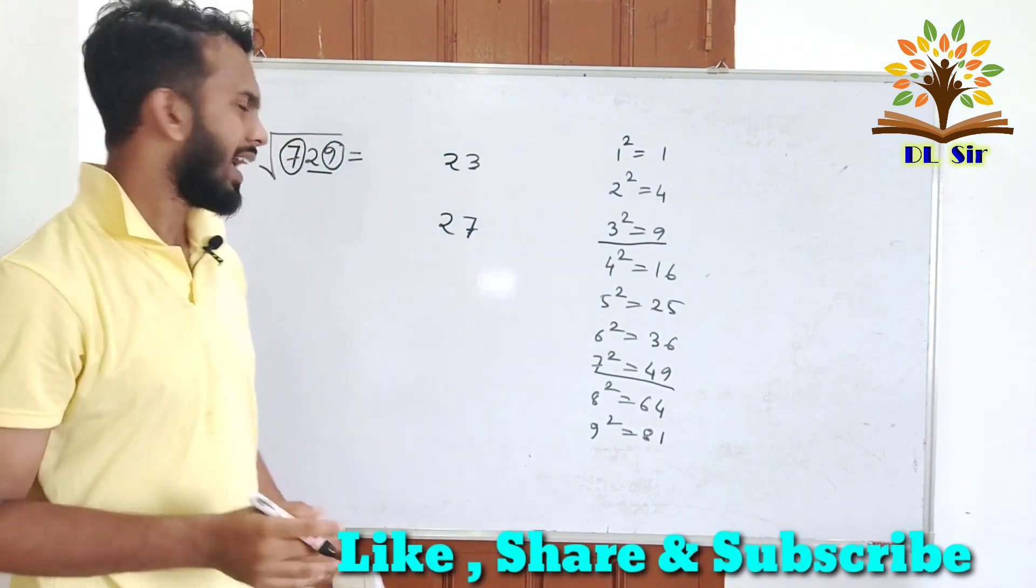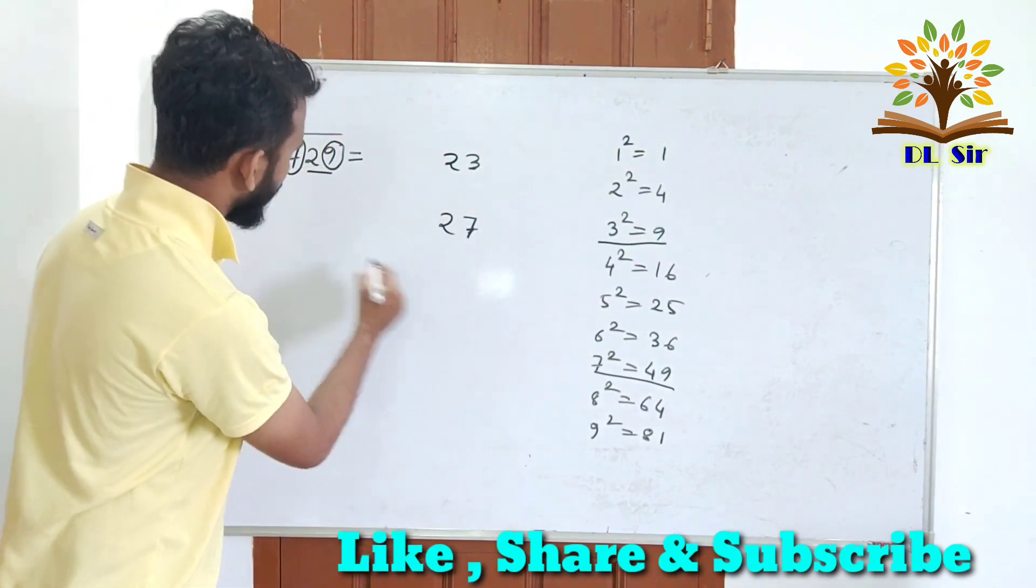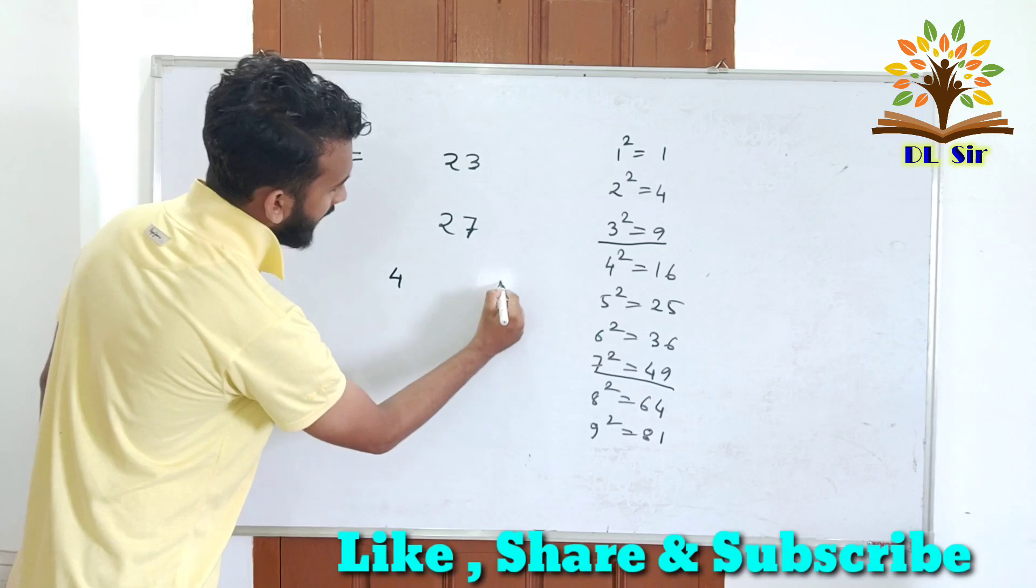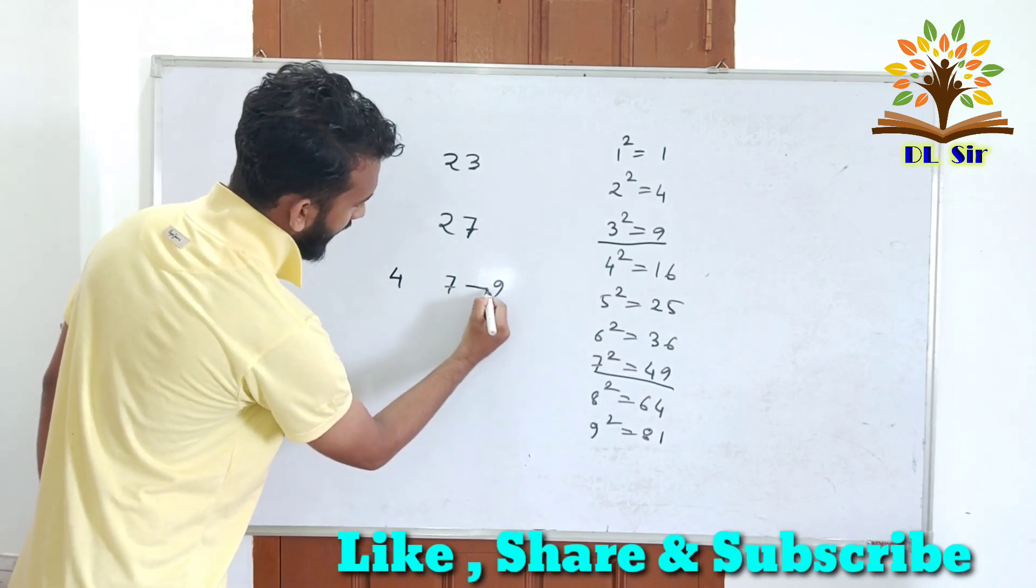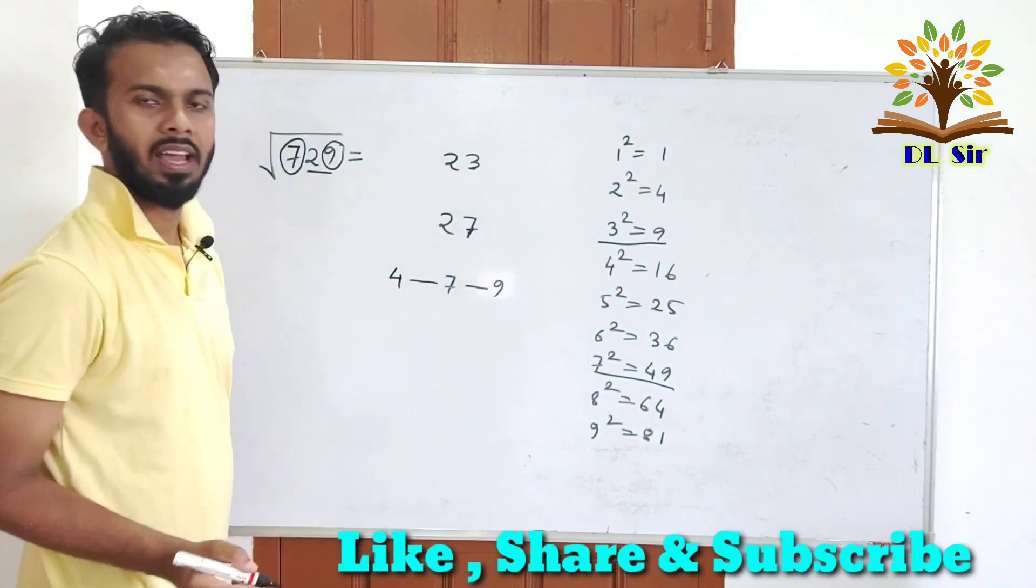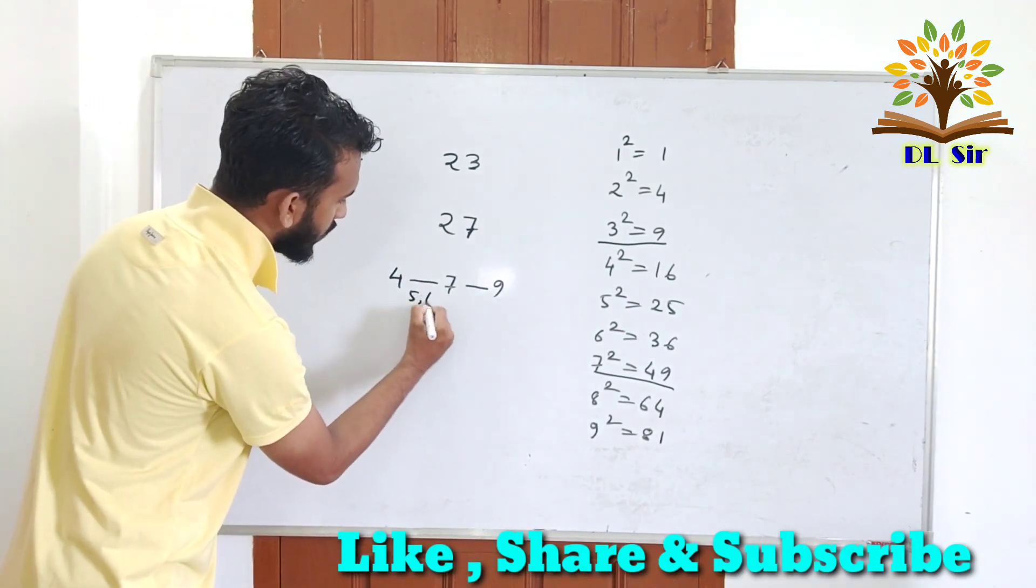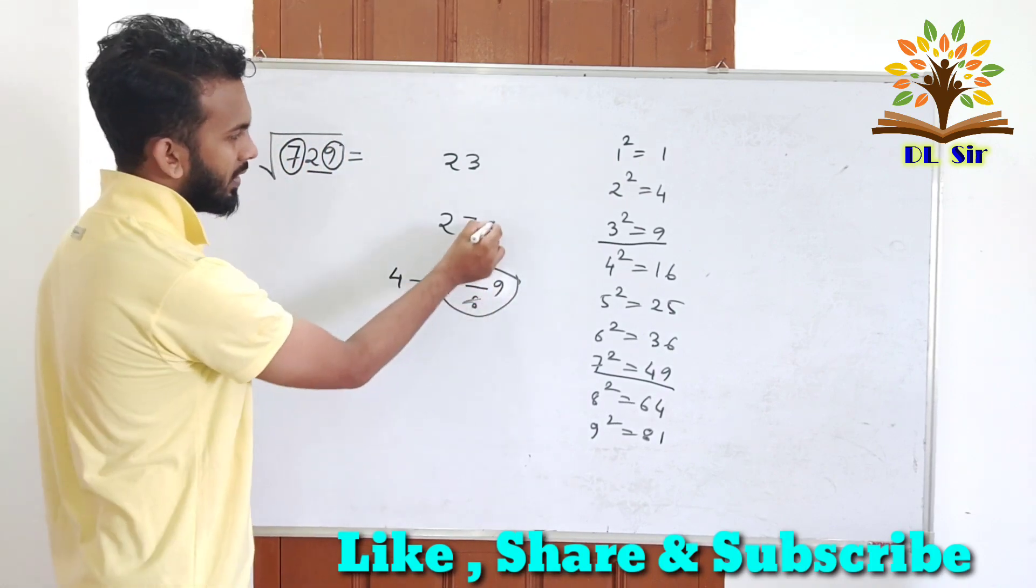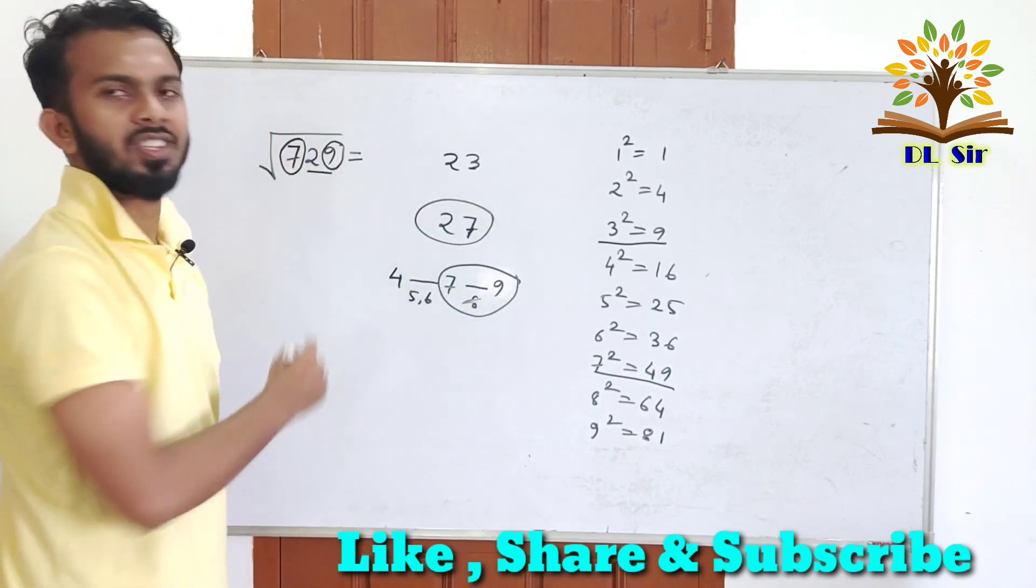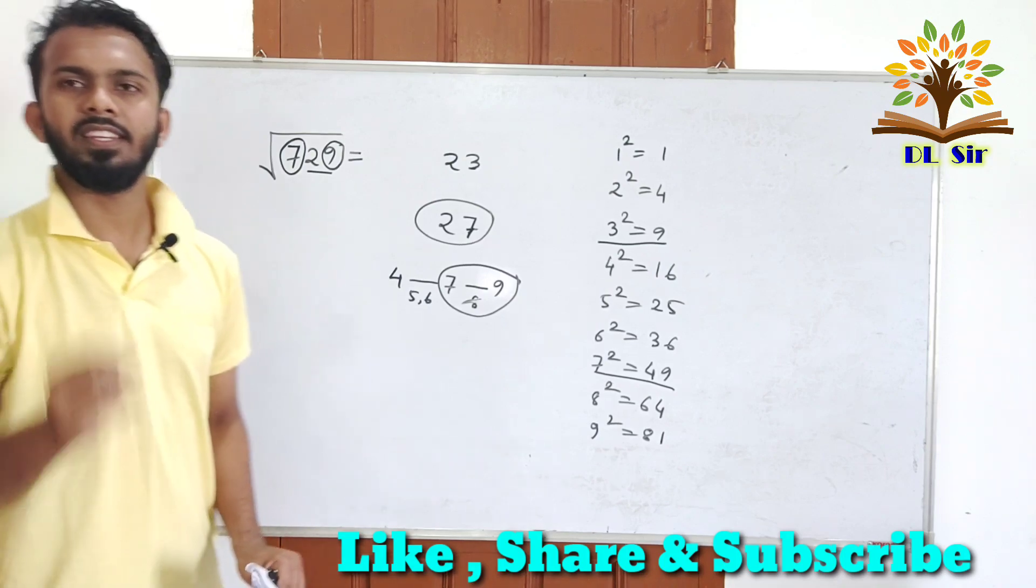Now 7 is 4 or 9 middle. How is it? 9 or 4? 4 is 5, 6 and 7 is 8. That means it is 9 or 4, 9 or 4 means 27 square. How do you understand?